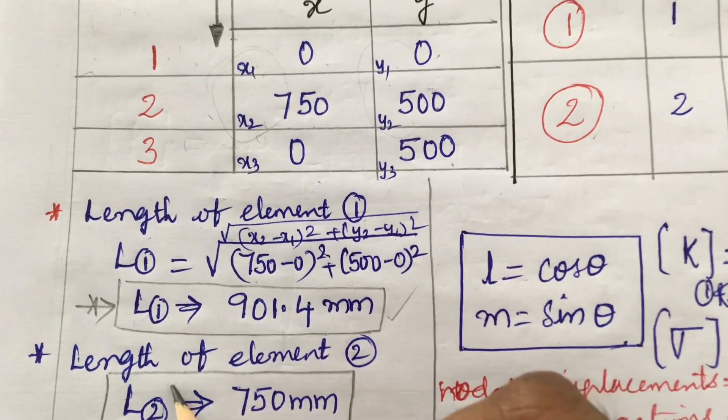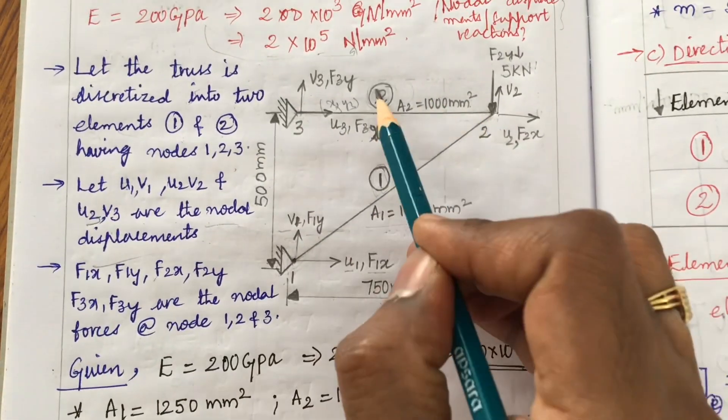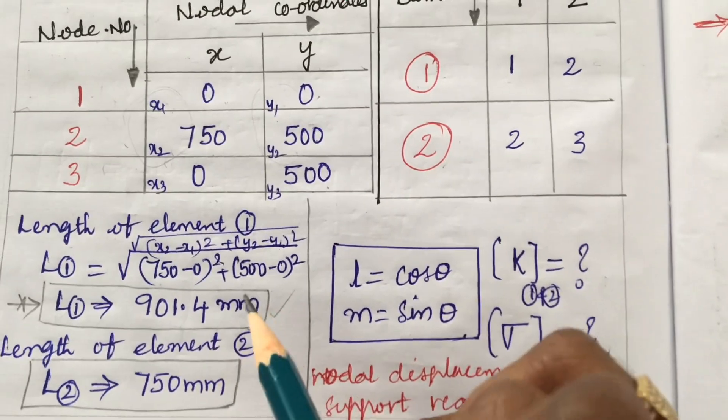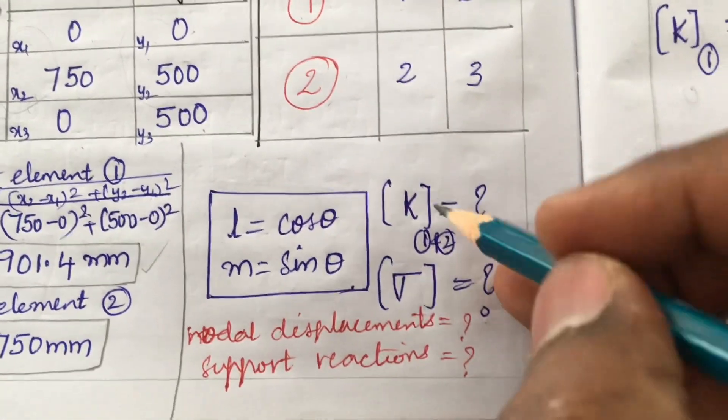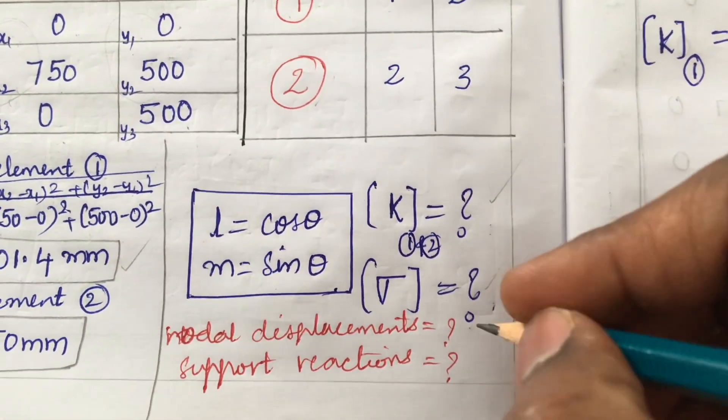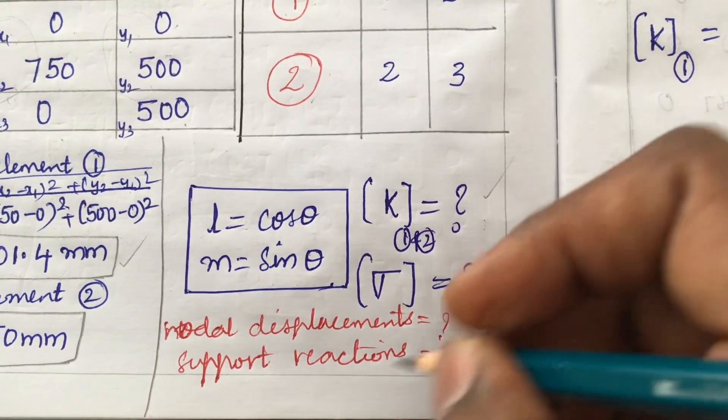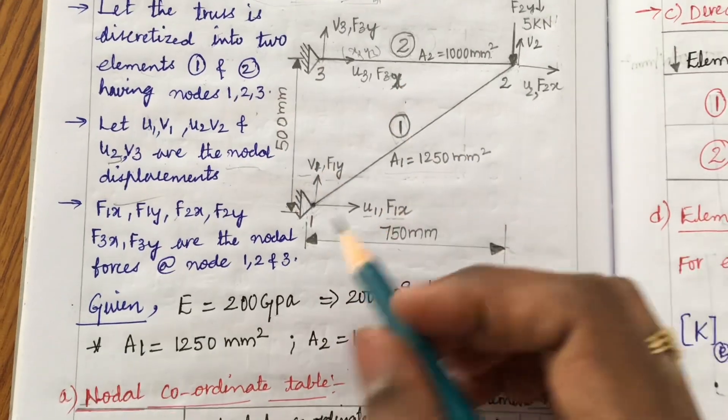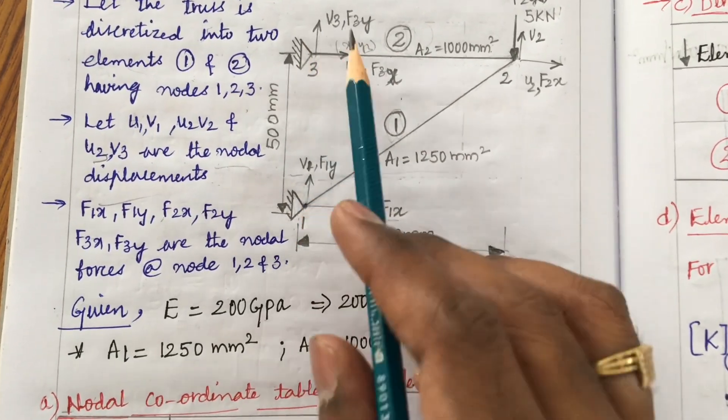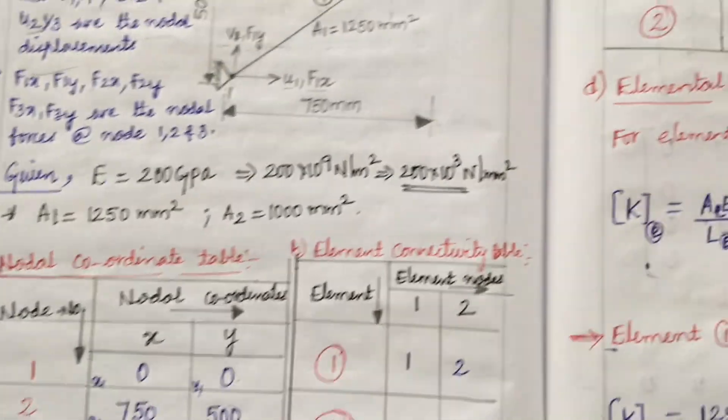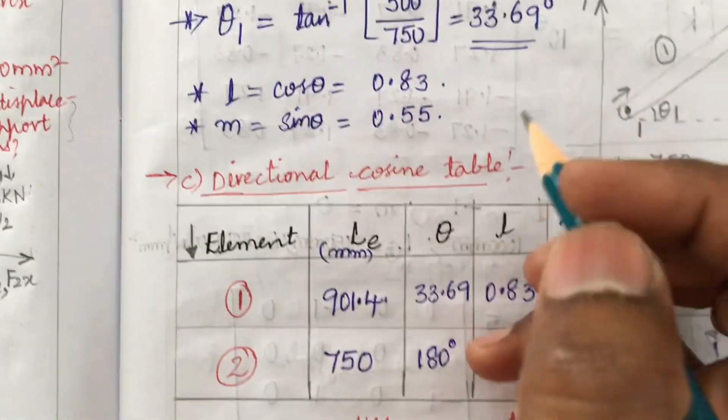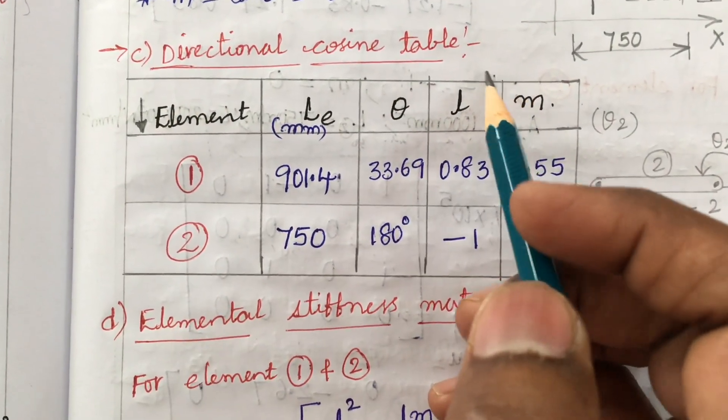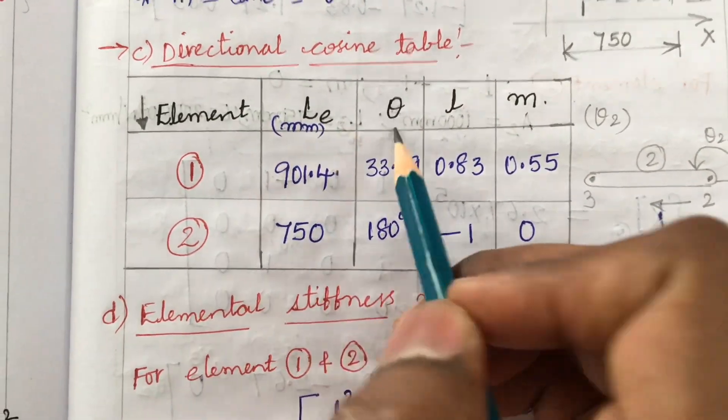According to Pythagoras, element 1 nodes are 1 and 2, so the length is root of (x2 - x1)² plus (y2 - y1)² whole square. Substitute these values and calculate. This is 901.4 millimeter. The length of element 2 is 750 millimeter. Next we need the direction cosine table.